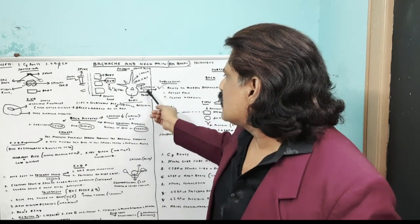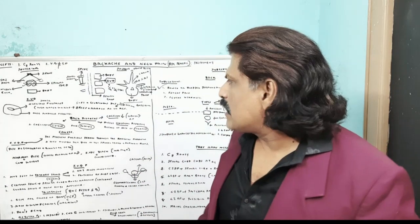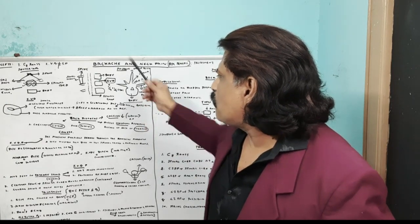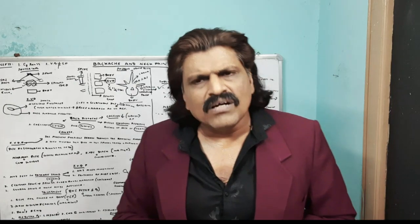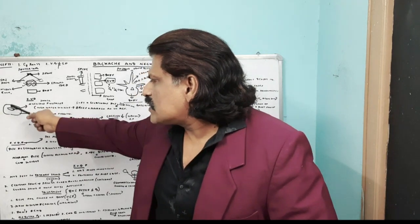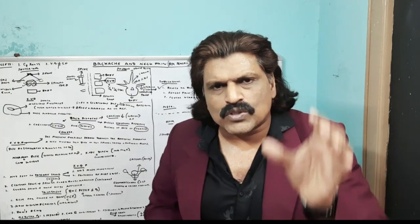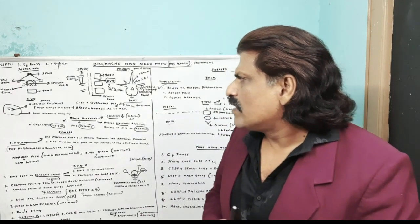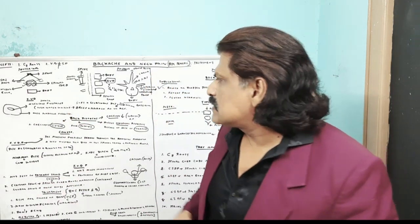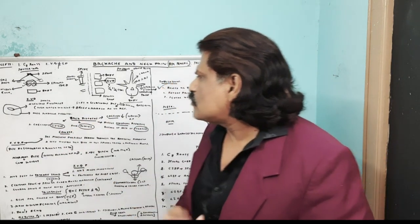The lamina and pedicle are important structures — we can do a laminectomy to approach the disc. The pedicle connects the anterior and posterior parts. The disc is a soft structure between vertebral bodies, corresponding to about 25% of spinal cord length. It has two parts: the inner nucleus pulposus and the outer annulus fibrosus.